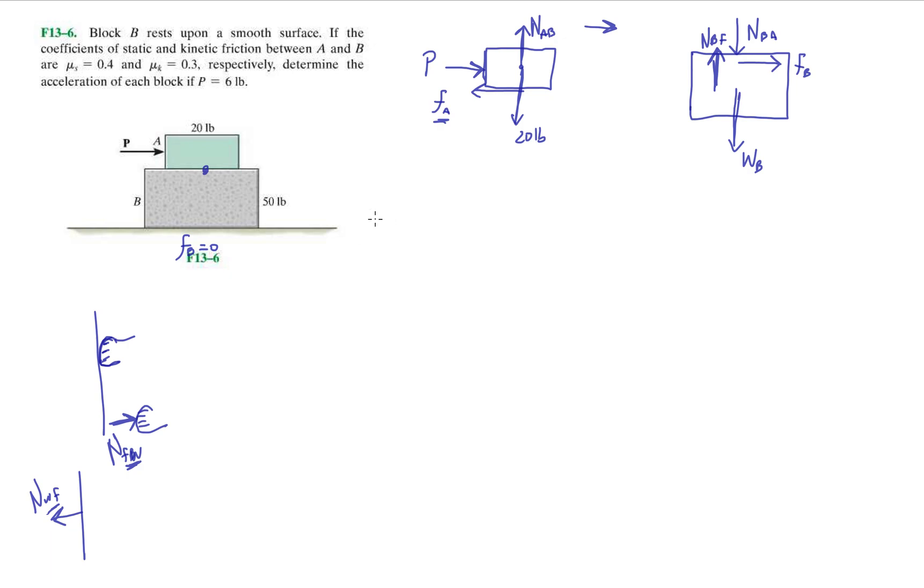Let's go back to block A, the top block. Let's try the horizontal forces, or let's figure out what they are. It's Newton's second law. It's going to be P minus friction equals the mass, which is going to be the weight divided by gravity, times the acceleration.